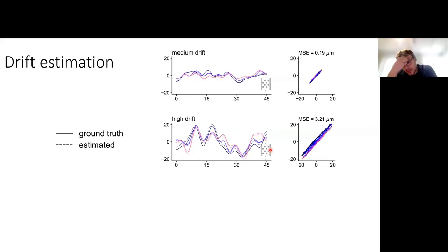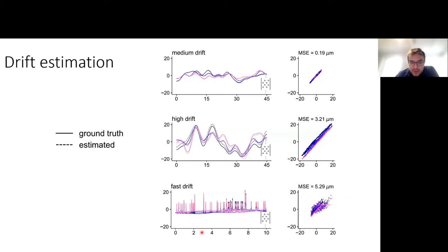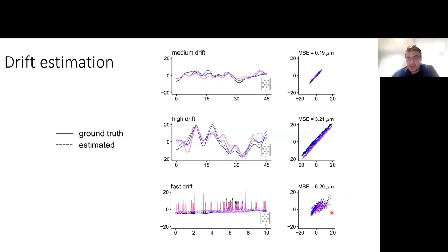The first thing we can ask is: is Kilosort able to estimate drift well? The answer is yes. Here's a medium drift simulation — the dotted superimposed lines are estimated versus ground truth, and they're right on top of each other. Similarly, in the high drift scenario they're very correlated. In contrast, in the fast drift situation, they're correlated but not as tight — simply because within the same batch there can be fast drift followed by a stable period. These will be cases where we want the clustering algorithm to step in and pick up the slack.